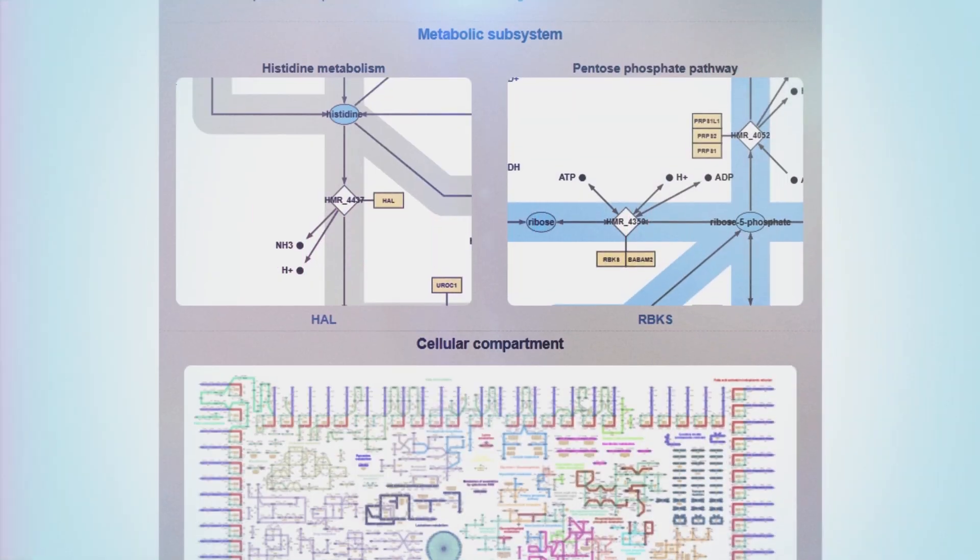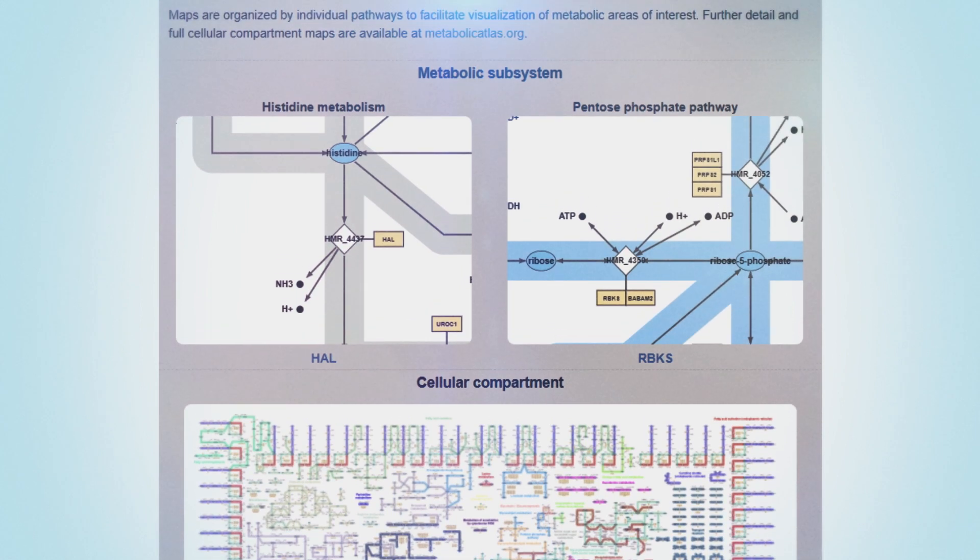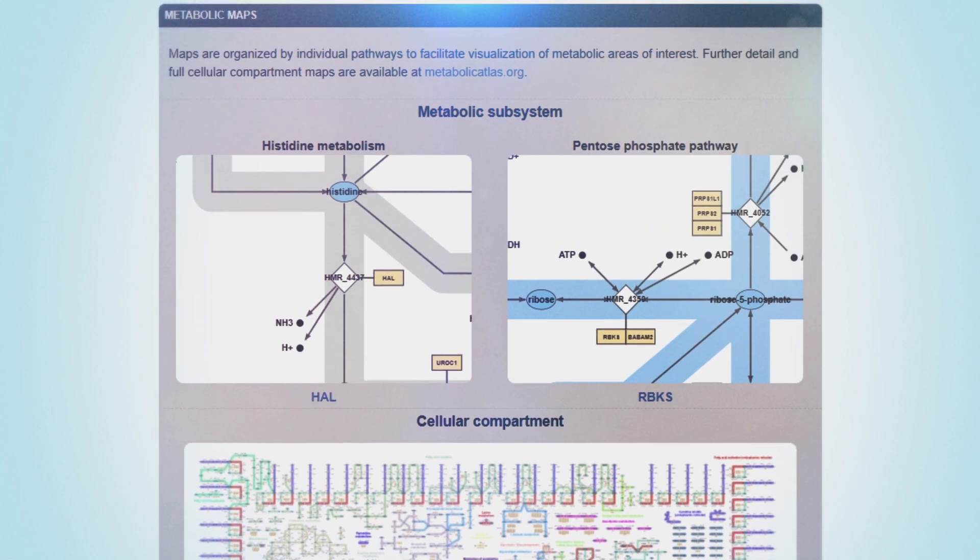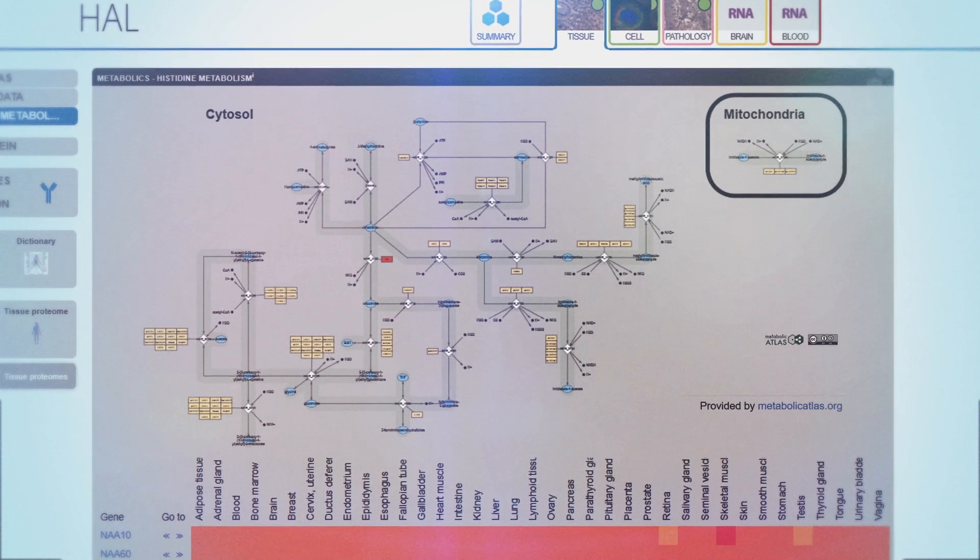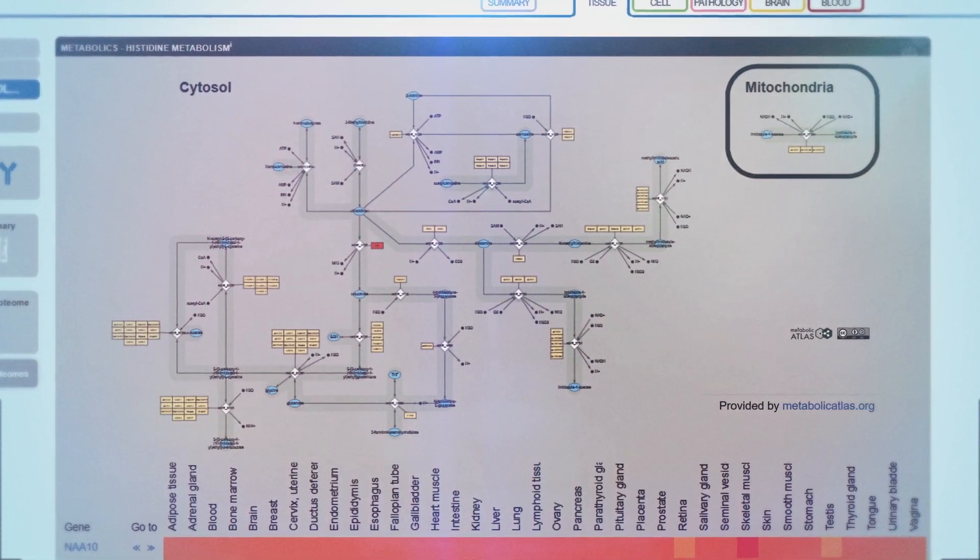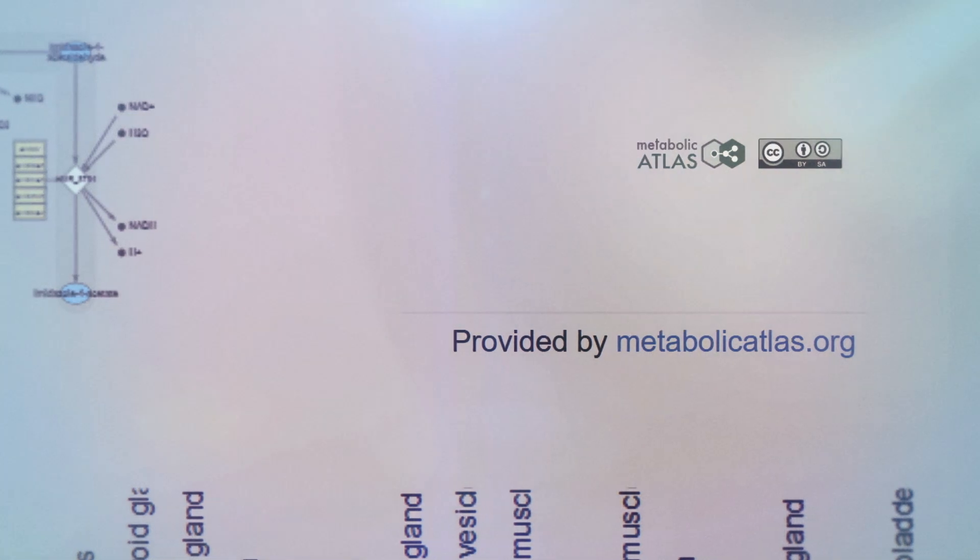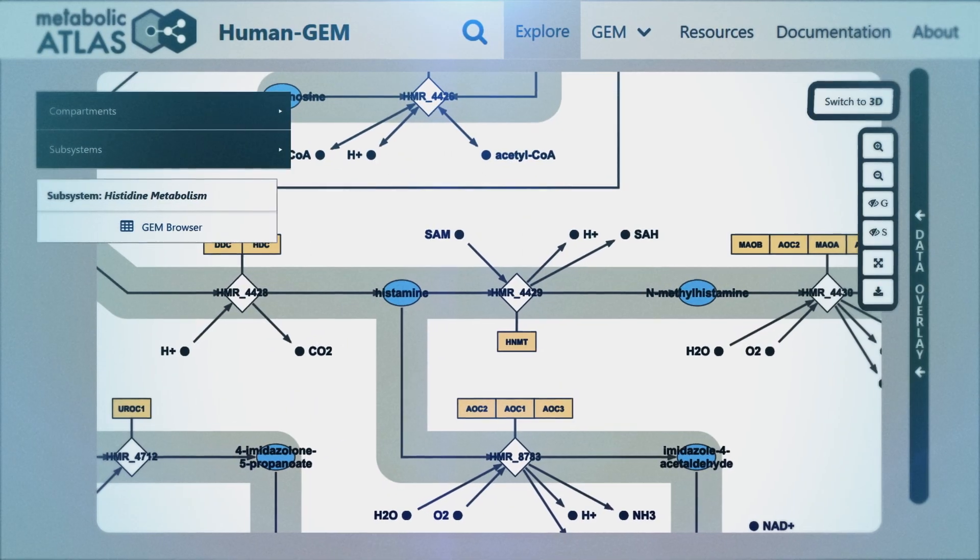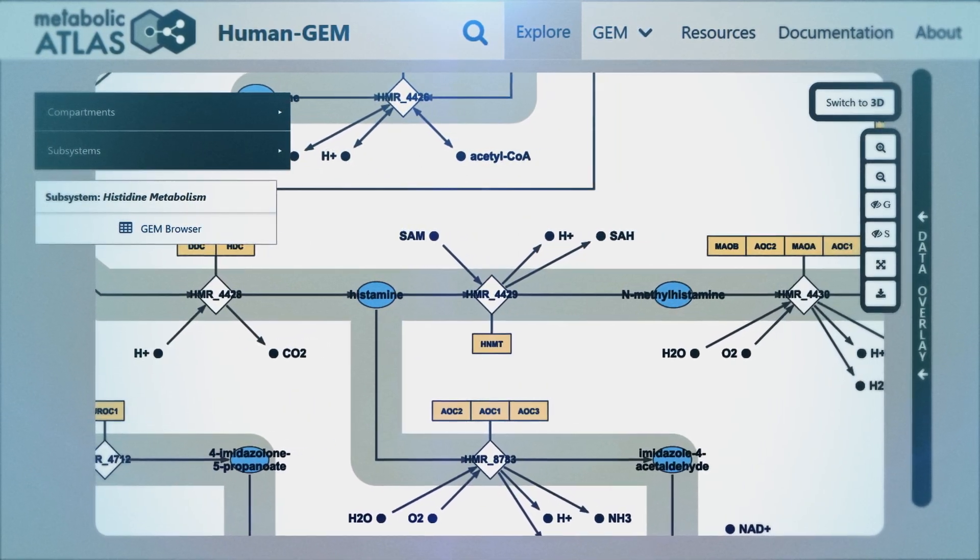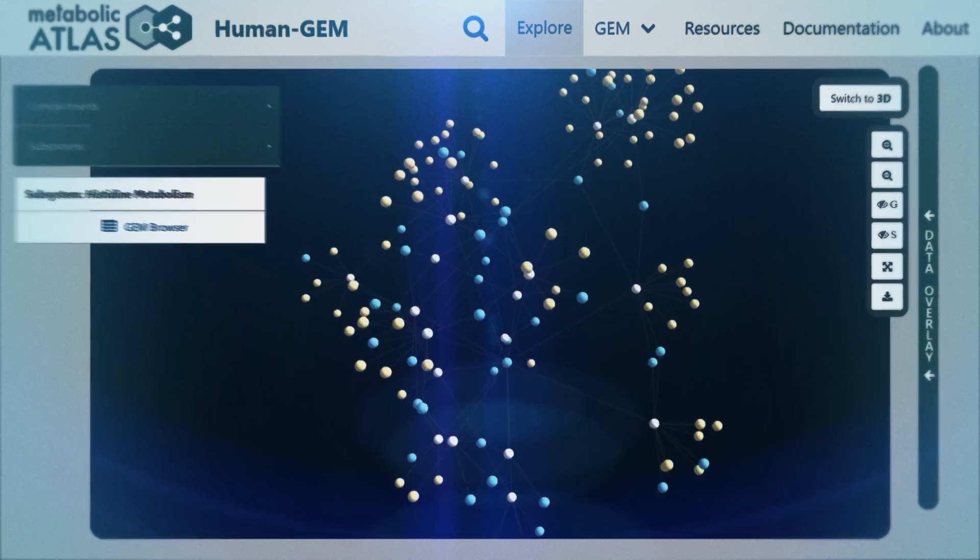The metabolic atlas explores the enzymes responsible for human biochemistry. A separate atlas has been created and data from this mapping effort has been incorporated into the tissue atlas. Here, it's possible to study the enzymes not only in 2D, but also in 3D.